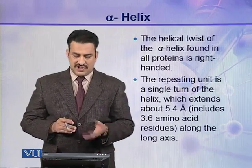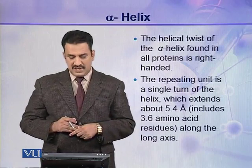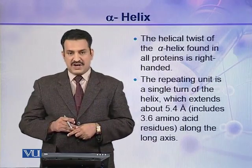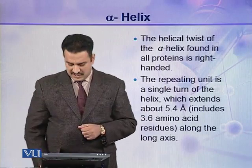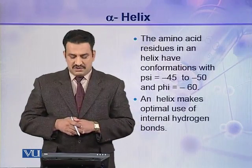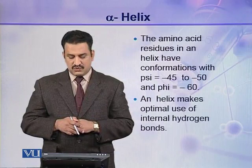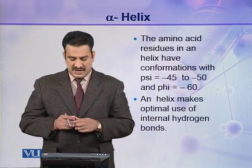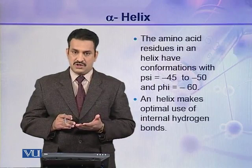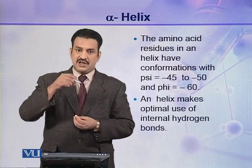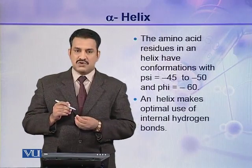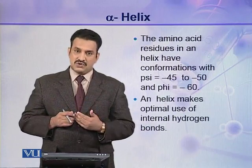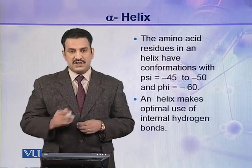The repeating unit is a single turn of the helix which extends about 5.4 angstroms and includes about 3.6 amino acids along the long axis of the helix. The amino acid residues in a helix have conformations with psi values ranging between minus 45 to minus 50 and phi values of about minus 60. In the helix, the peptide bond is rigid and does not rotate, but the adjacent bonds rotate and their angles psi and phi are as given.